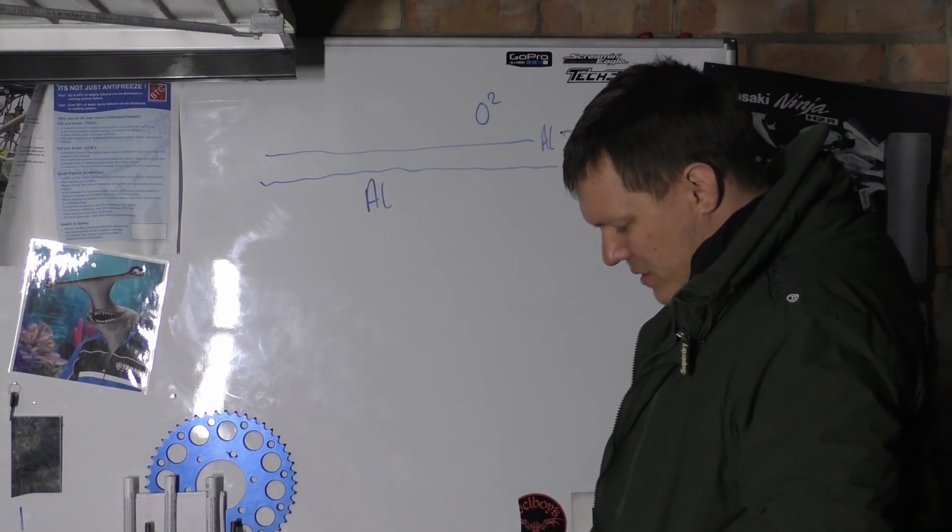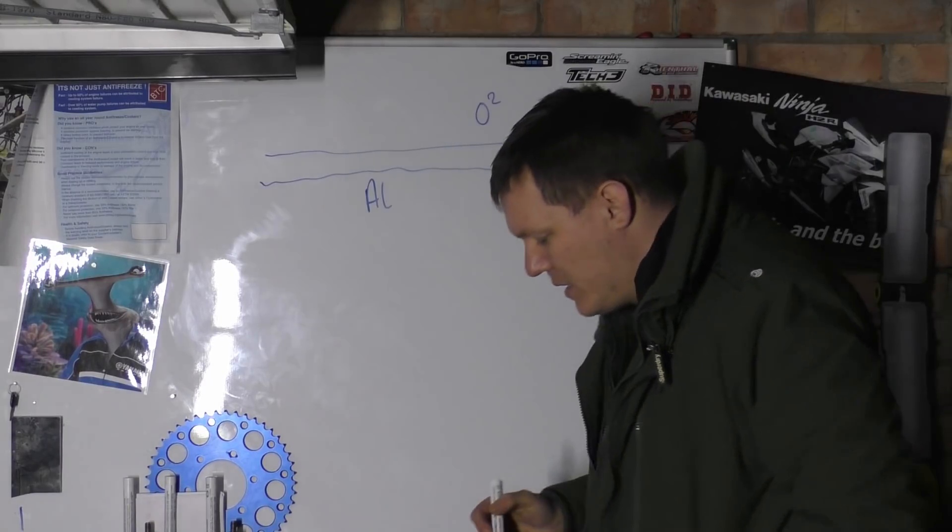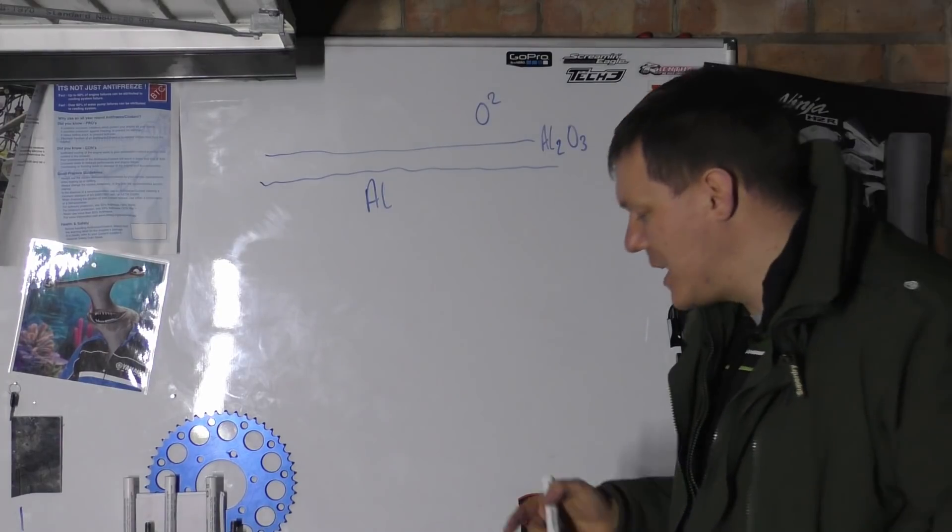Aluminum oxide, I did write this down, there's two in it, yeah that's the one. Al2O3, that's aluminum oxide.